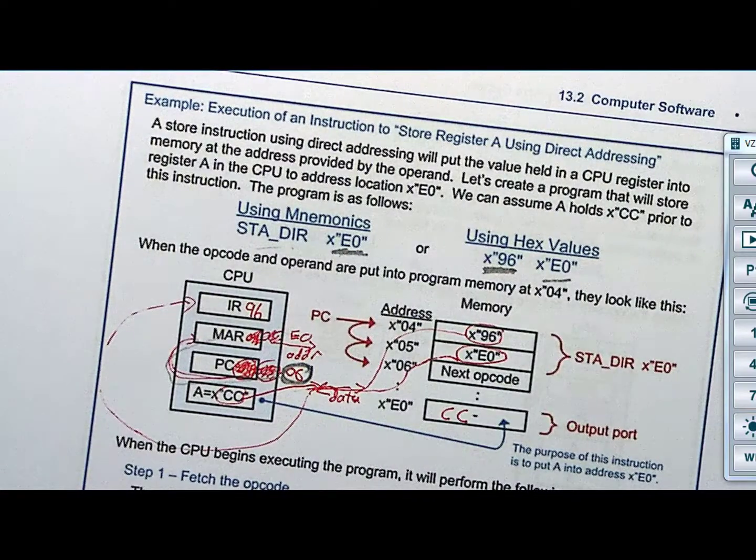Those are the loads and stores that we will have in our computer system. In fact, you know what we're going to do? I think we should have a load A immediate. I think we should have a load B immediate. I think we should have a load A direct, a load B direct. I think we should have a store A direct and a store B direct. Do you agree? We now have six instructions just by the class of loads and stores.